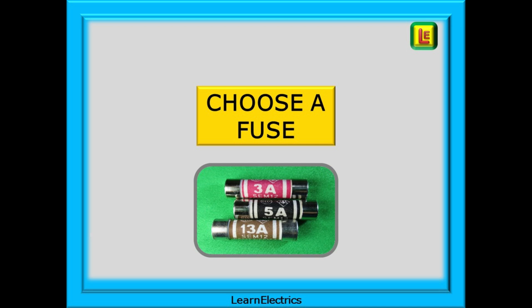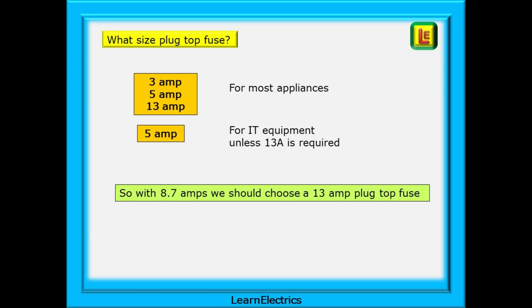But how do we go about choosing a fuse? It's bad practice to fit a 13 amp fuse for everything — we should always try and choose a fuse close to the actual working current. A bedside lamp, for instance, only needs a 3 amp fuse. There used to be seven different fuse sizes for your everyday plug top, but manufacturers have stopped making certain sizes on economic grounds. The industry is standardising on three sizes: 3 amp, 5 amp, and 13 amp. All we need to do is choose the size equal to or just above the current demand of the appliance. Most IT equipment should come with a 5 amp fuse as standard, and this is often printed onto the computer plug and lead. So based on this, with 8.7 amps in the last example, we should choose a 13 amp plug top fuse.